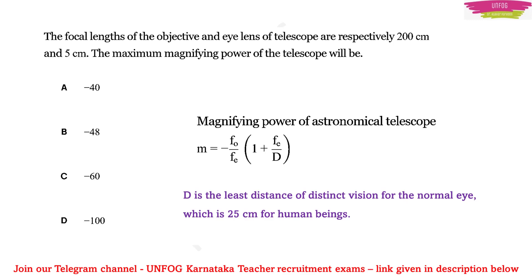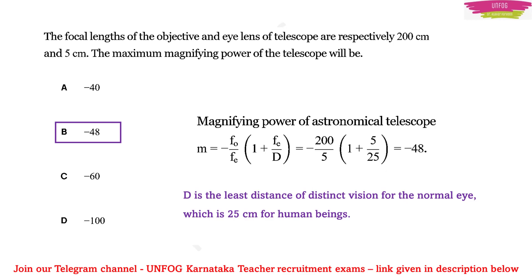They have given you F0 and Fe, and you know that capital D equals 25 cm. Just substitute the values: minus 200 upon 5, multiplied by 1 plus 5 by 25. Do the simple arithmetic, and your answer will be minus 48.